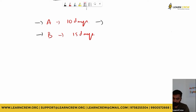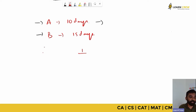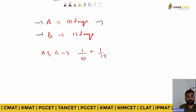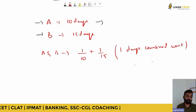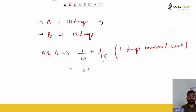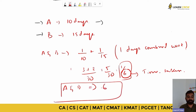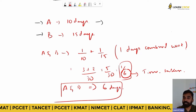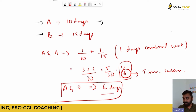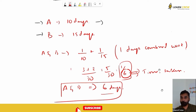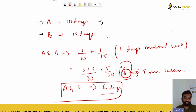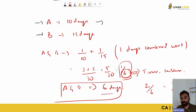If A and B are working together, their combined one day's work is 1/10 + 1/15. The LCM of 10 and 15 is 30, so this becomes 3/30 + 2/30 = 5/30 = 1/6. So A and B together complete the work in 6 days. The denominator of the combined one-day work gives the total number of days.